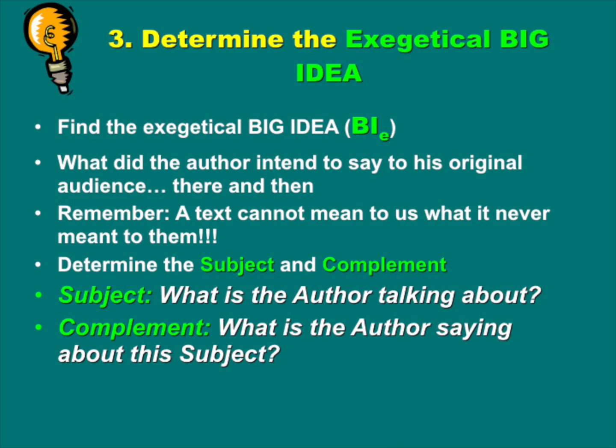The third step is to find the exegetical big idea. What did the author intend to say to his original audience, there and then? Remember, a text cannot mean to us what it never meant to them — this is very important. We have to understand what the text meant to them at that time. Determine the subject and complement. The subject is: what is the author talking about? The complement is: what is the author saying about the subject?